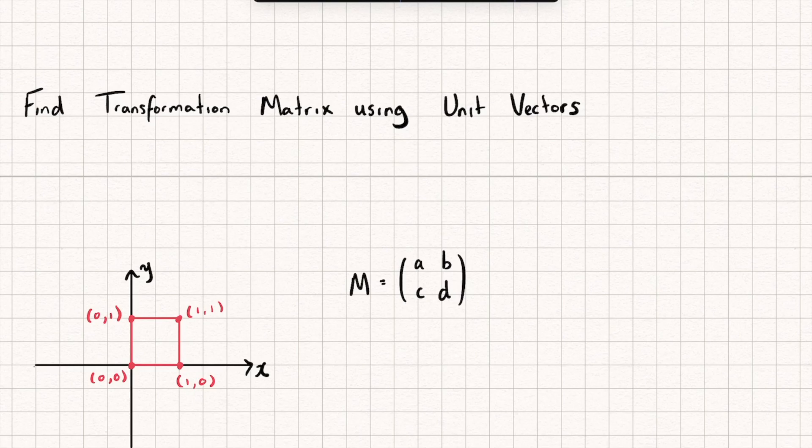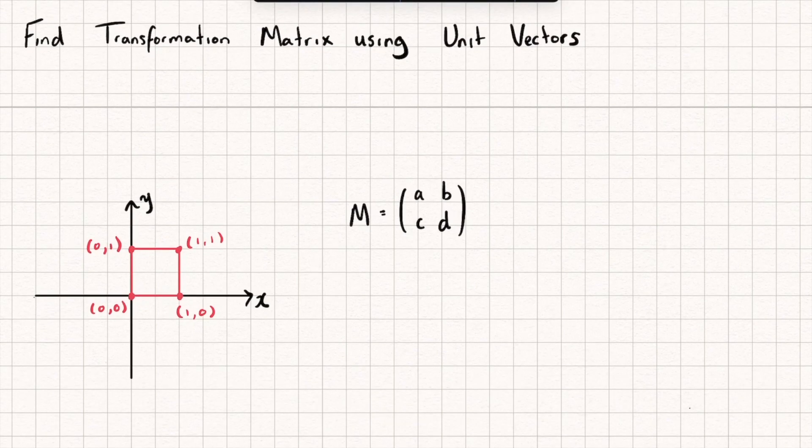Okay, so let's see why it is we're only really interested in our unit vectors when we're looking at how to find a transformation matrix. So let's first look at the unit square and I'm going to apply a generic transformation M to the unit square. And so to find out what happens, I'm going to take my transformation matrix and multiply it by each of the vertices of the unit square.